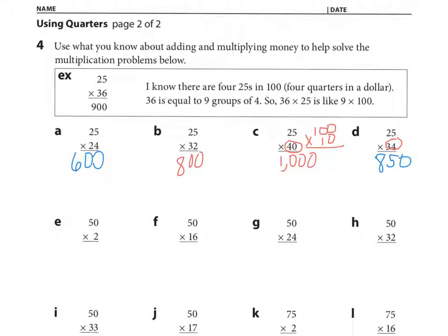Let's look at E, 50 times two, I think 50 doubled. 50 doubled is 100. F, 50 times 16. And so here I'm thinking, what's half of 16? That is eight. And so I think eight times 100, which is 800. Let's look at G, 50 times 24. What's half of 24? 12. So what do I think of this as? 12 times 100, which is 1200.